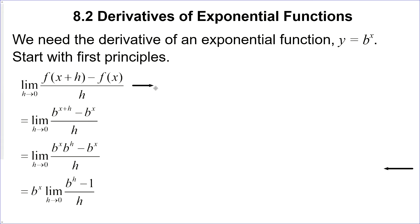So if we put this into our formula, we have the limit as h goes to zero of f(x+h) minus f(x), all over h. And we put in our function: b to the power of x plus h, minus b to the power of x. We can use our exponent rules and separate this out. Then b to the power of x is actually independent — it has nothing to do with h anymore. So we can factor it out and put it in the front, but it still leaves us with this big mess.